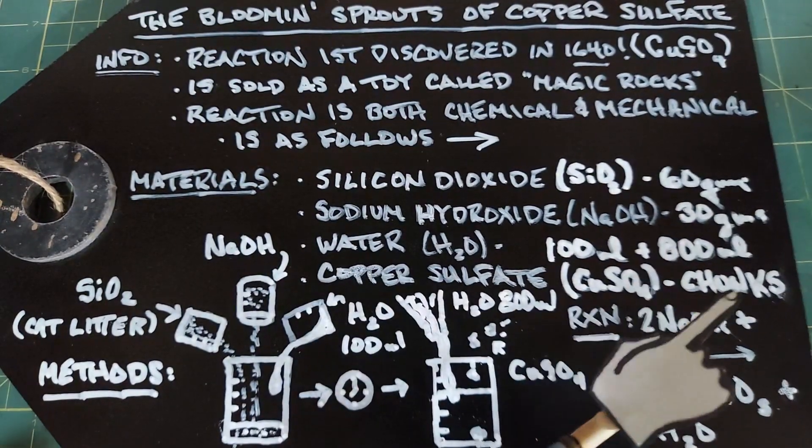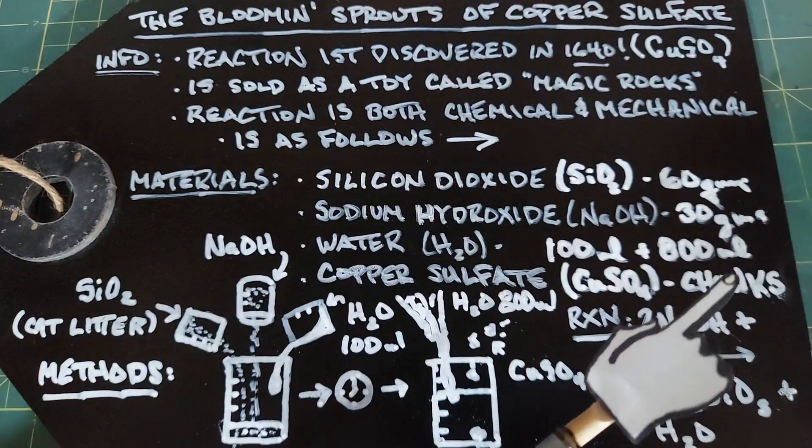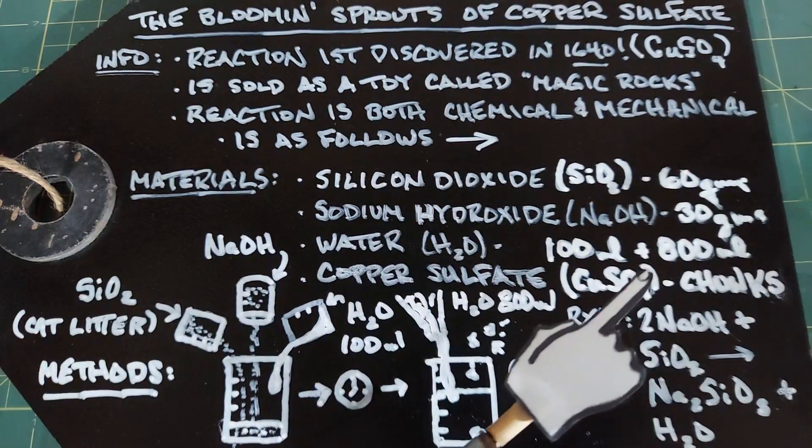We need the copper sulfate CuSO4. You want chunks, you don't want powders or just broken little bits. You could do that but the reaction is not going to really work that well. You want a good chunk at least a centimeter in diameter if you can do it.